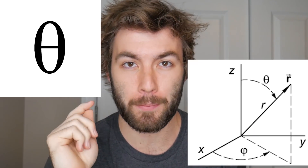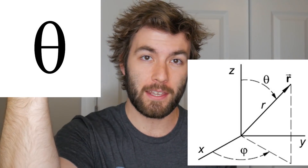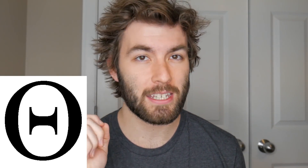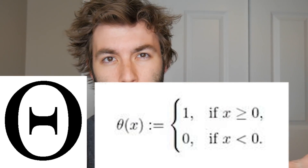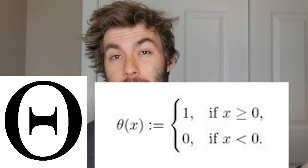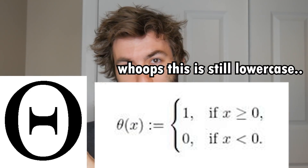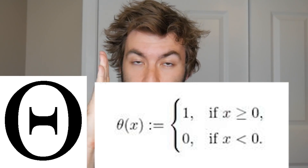Now let's talk about lowercase theta. Theta everyone knows is an angle, but which one? It depends on whether you ask a mathematician or a physicist. For physics, it's common to use theta as the polar angle, being the angle from the z-axis downwards. Capital theta can also be used in physics to denote the step function, which is commonly used when solving the Schrödinger equation for some step potential, and its derivative is actually the delta function because it has an infinite slope there.